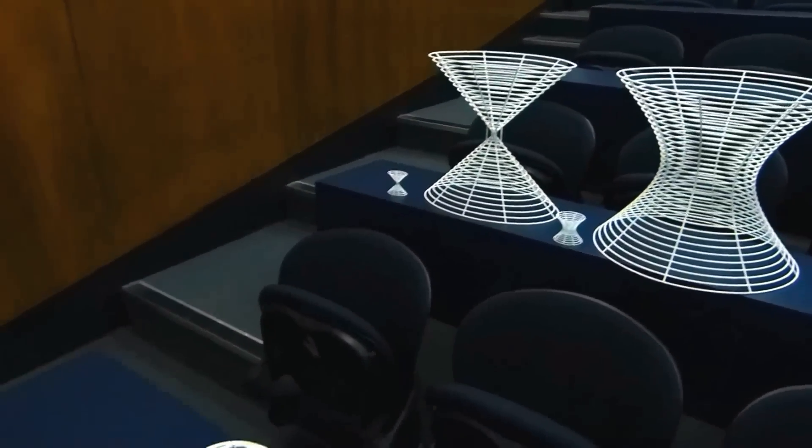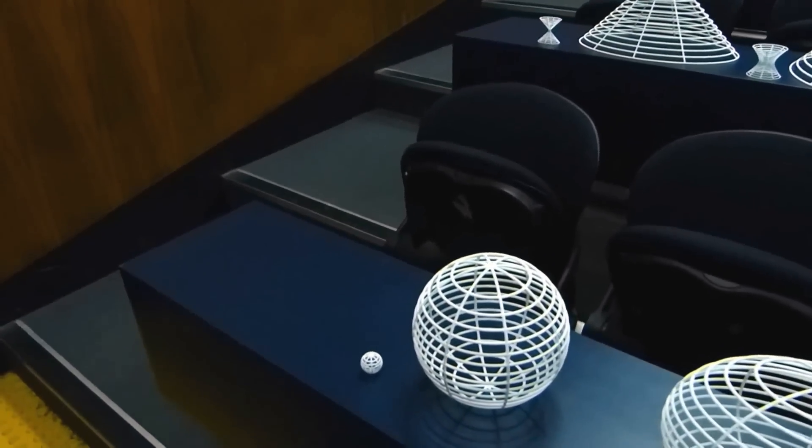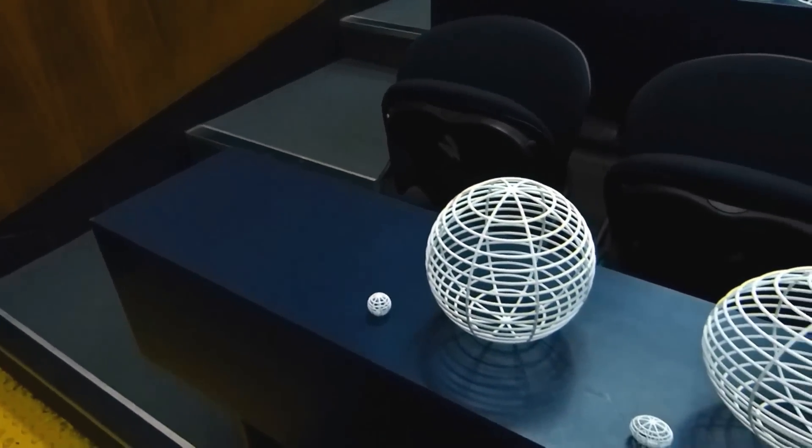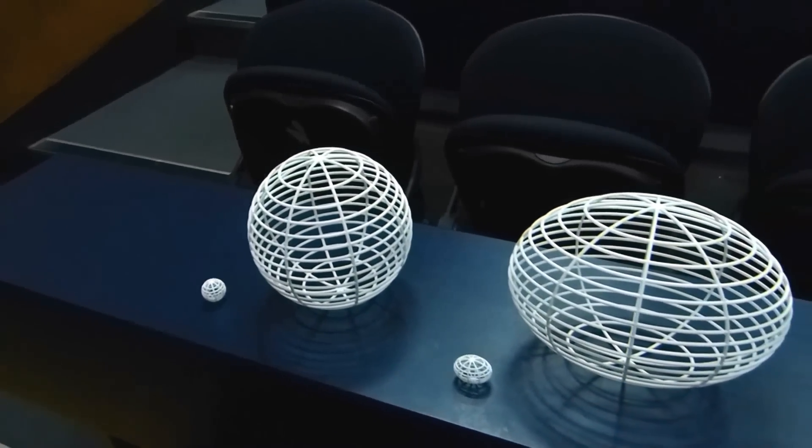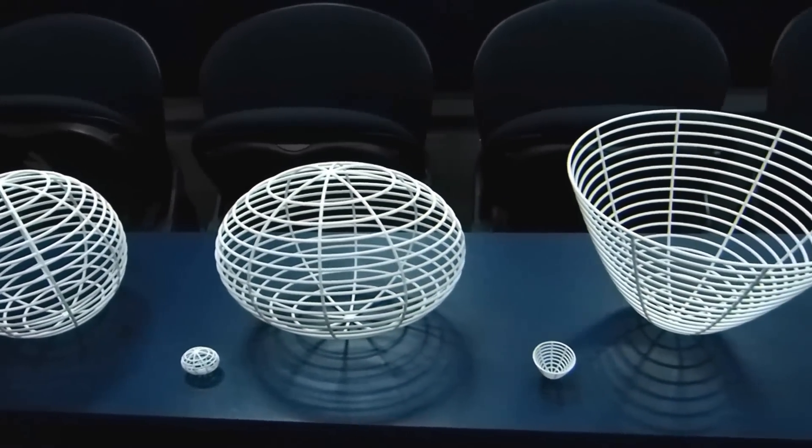And the large versions are about six and a half times the linear scale of the small versions. So they're a lot bigger and impressive and more visible at the front of the class. They're also a lot more expensive, of course.